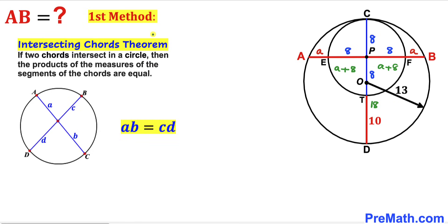Now let's recall the intersecting chords theorem. According to this theorem, if two chords intersect inside a circle, then the products of the measures of their segments are equal, as shown in the diagram.